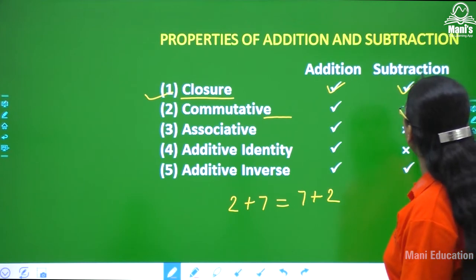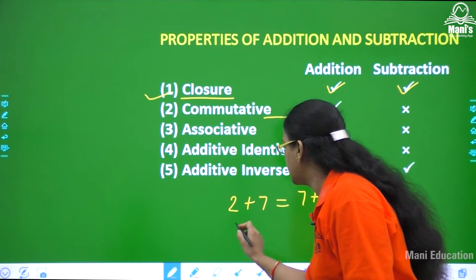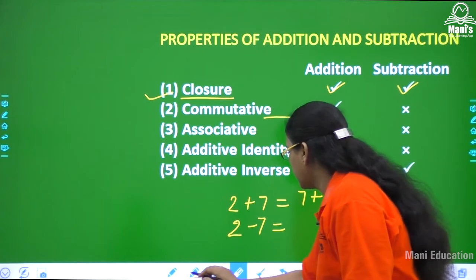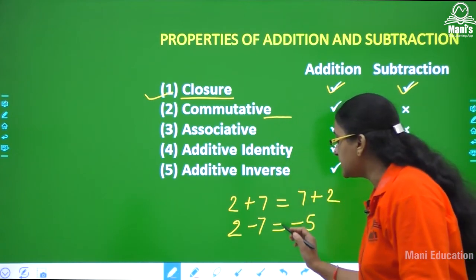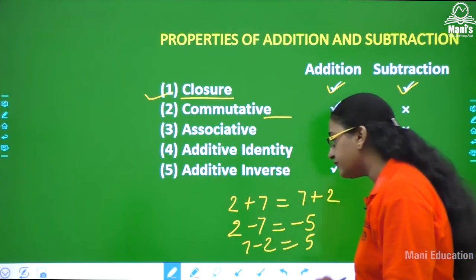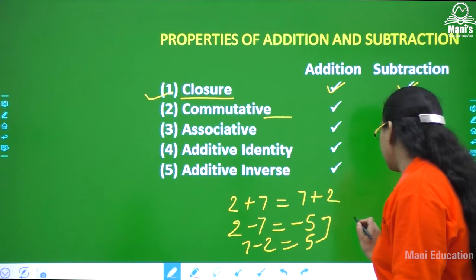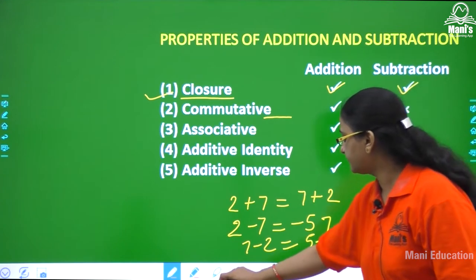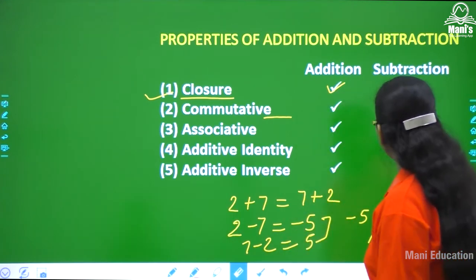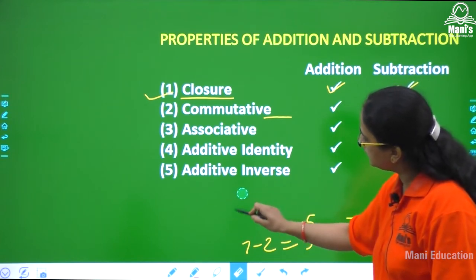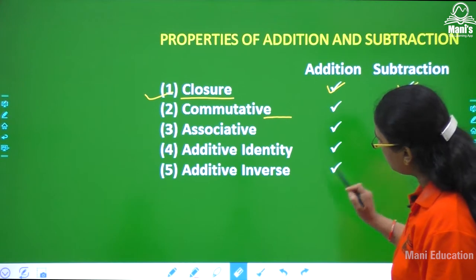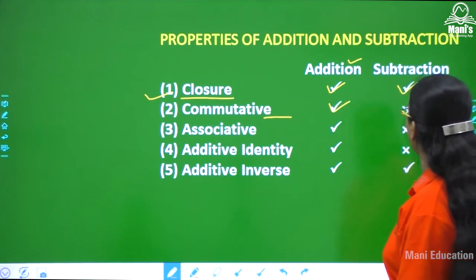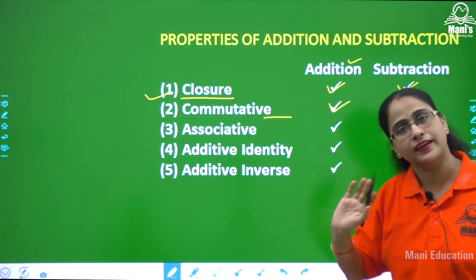But if I talk about subtraction — instead of 2 plus 7, I do 2 minus 7, that gives minus 5. And 7 minus 2 gives plus 5. We know that minus 5 and plus 5 are not equal. So the commutative property follows for addition but does not follow for subtraction.